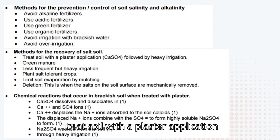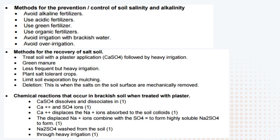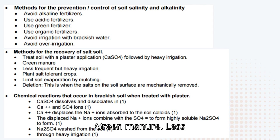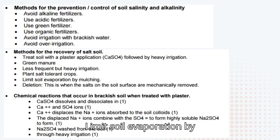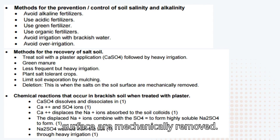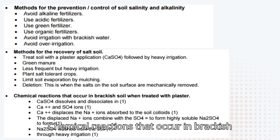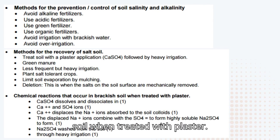Methods for the recovery of salt soil: treat soil with a plaster application — CaSO₄ — followed by heavy irrigation. Apply green manure. Use less frequent but heavy irrigation. Plant salt-tolerant crops. Limit soil evaporation by mulching. Deletion — the mechanical removal of salts from the soil surface.